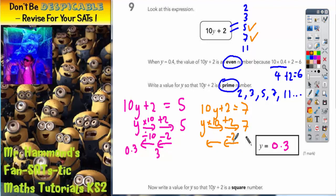We would then have reversed it backwards. Opposite of add 2 is take 2. Opposite of times 10 is divide by 10. 7 take 2 is 5. And 5 divided by 10 is 0.5. So we could have also had the answer of y equals 0.5.